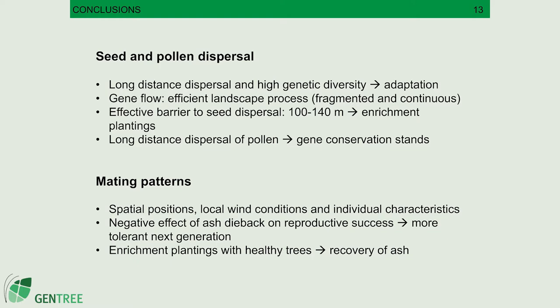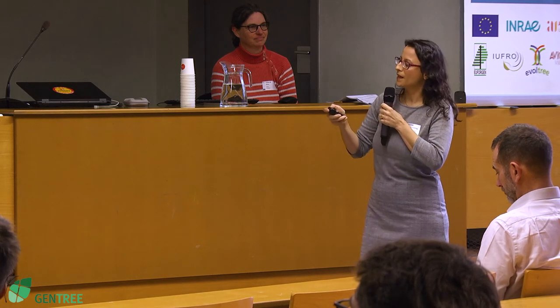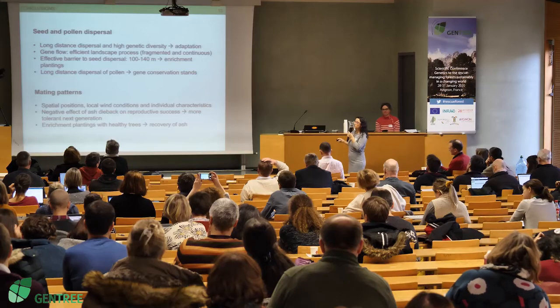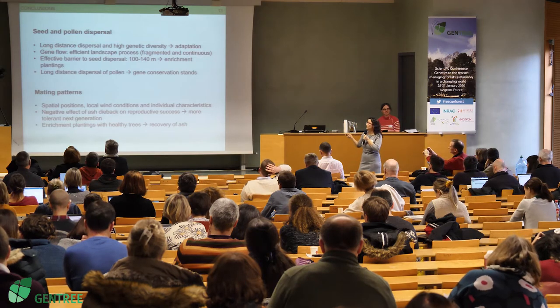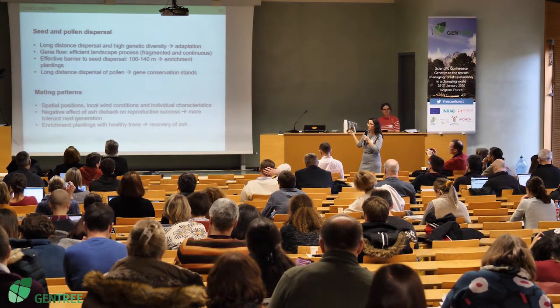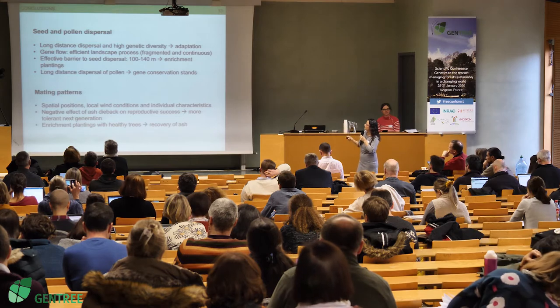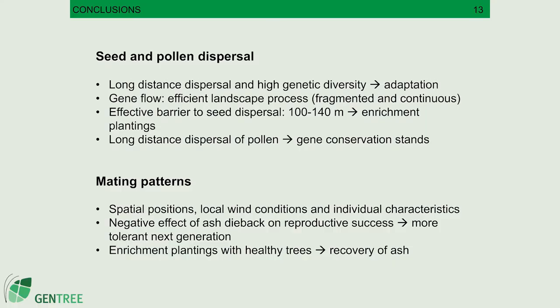In summary: we see that there is long-distance dispersal in this species. Together with high genetic diversity, this suggests the species has adaptation ability. Gene flow is an efficient landscape process in ash, both in fragmented and continuous forests. The effective barrier to seed dispersal — which can be used as a guideline for enrichment planting spacing — is approximately 100 to 140 meters.